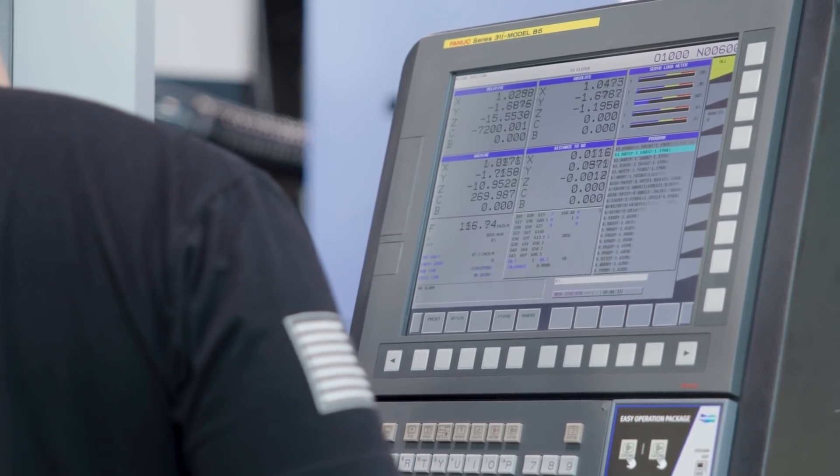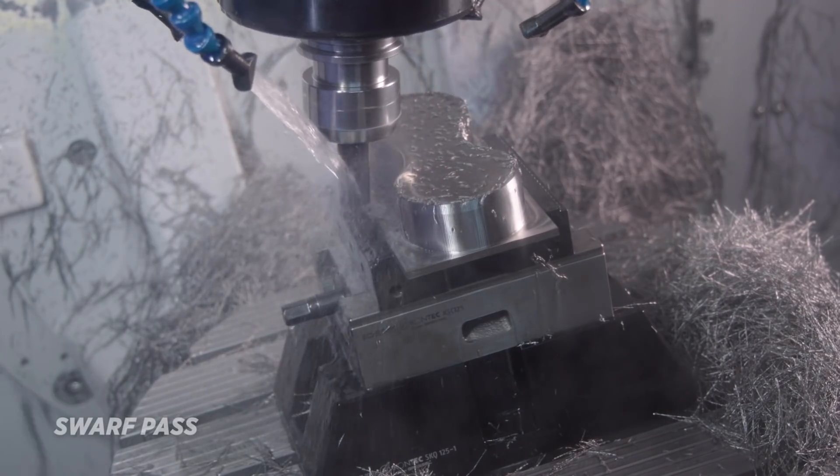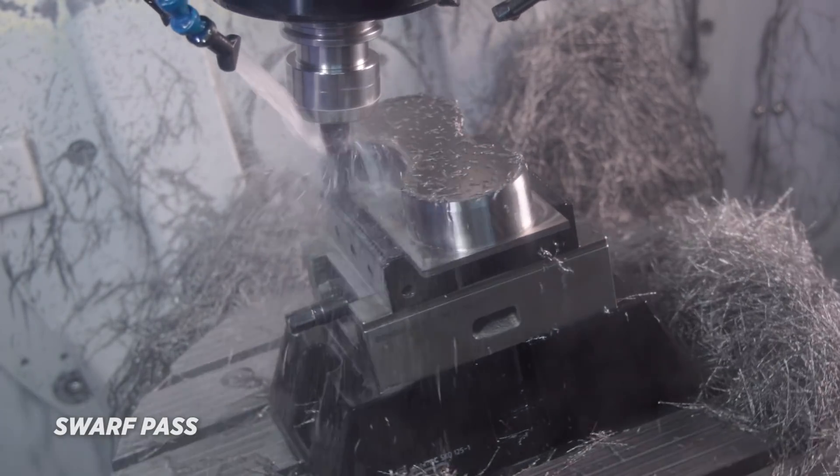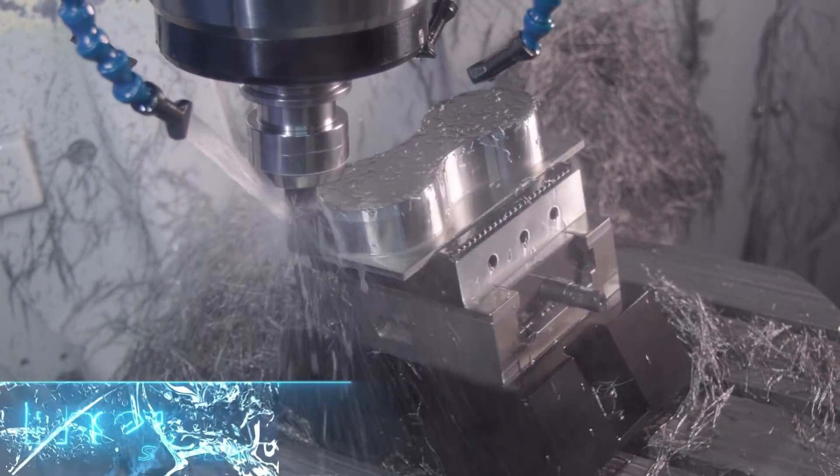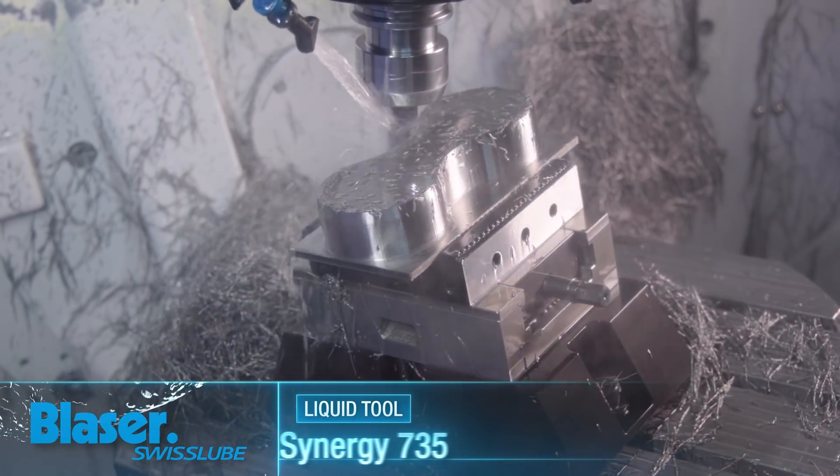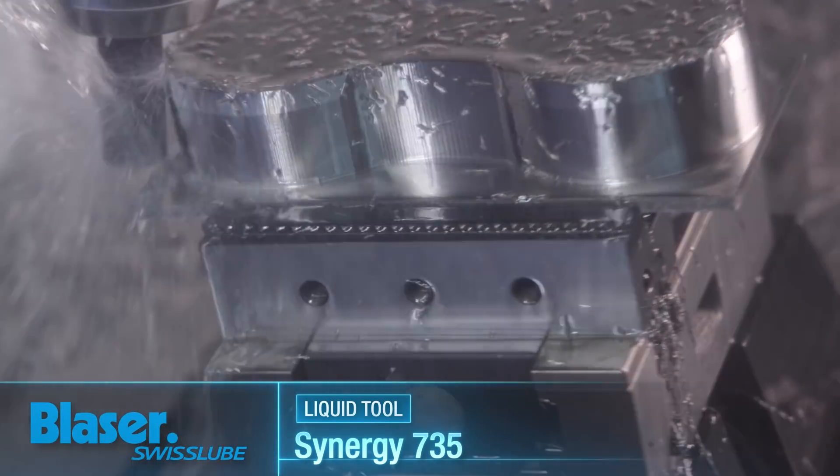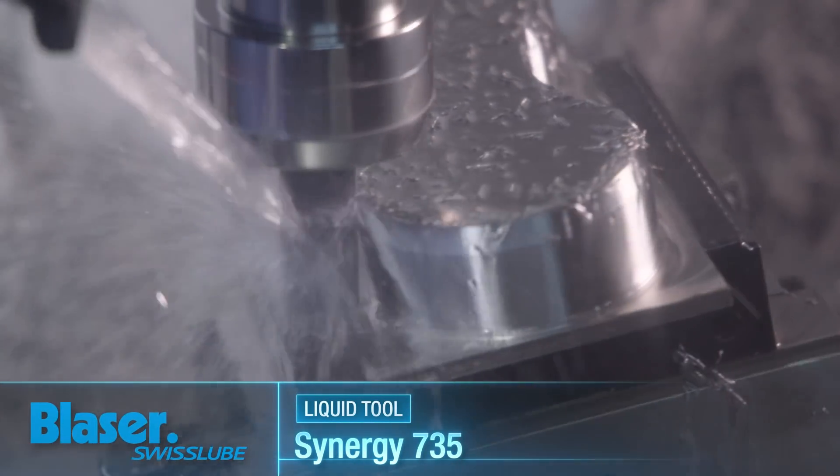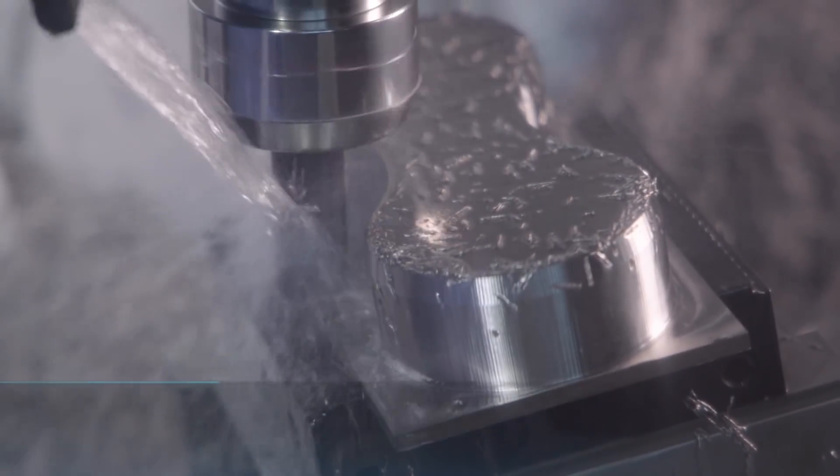But if you have a part that has a lot of stock to remove, then the Core 6 is going to be much faster for roughing because you can get away with a lot larger stepover. But in applications where you have a light radial stepover, the higher flute count is going to give you a higher metal removal rate than the lower flute count will.